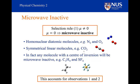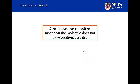So this accounts for our observations 1 and 2. These observations were that a molecule like dioxygen won't have a microwave spectrum but a molecule like carbon monoxide would, because it has a permanent dipole moment. I need to reinforce, however, that just because a molecule is microwave inactive, it doesn't mean that it doesn't have rotational levels. Dioxygen and dinitrogen molecules are rotating just like any other molecules and have rotational energy levels. It's just that microwave radiation cannot excite them from one rotational state to another. They can change rotational state by colliding with other molecules. The Schrödinger equation will tell us what those levels are, even if we can't see them in spectroscopy.